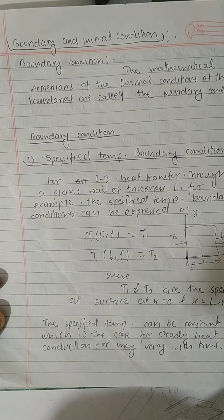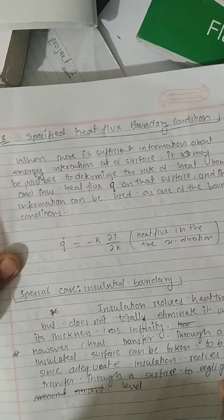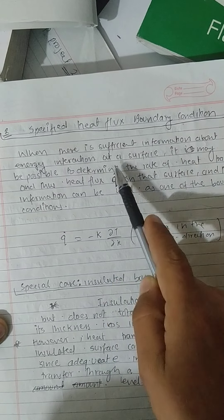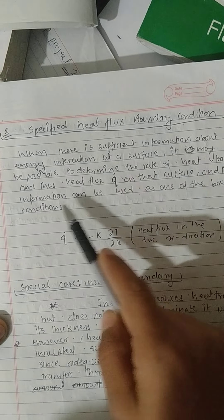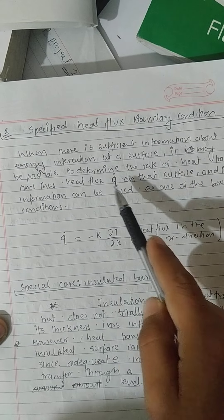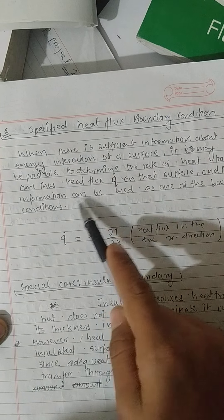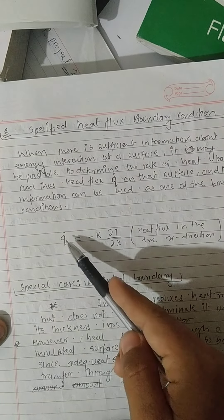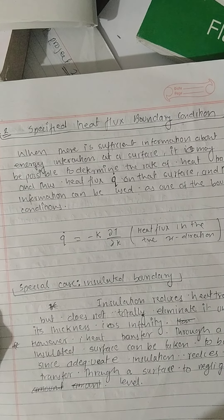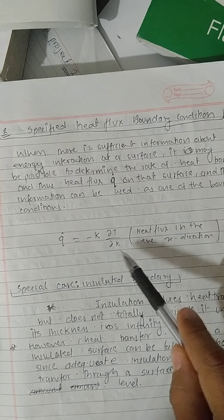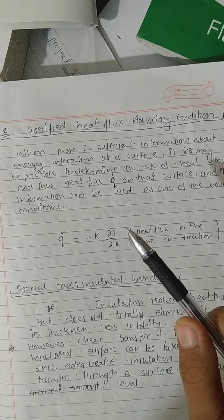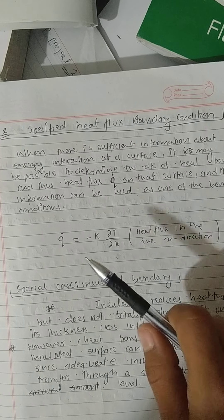The specified temperature can be constant, which is the case for steady heat conduction, or it may vary with time. For the specified heat flux boundary condition, when there is sufficient information about energy interaction at a surface, we can determine the heat flux q″. This is given as q″ = −k · ∂T/∂x, the heat flux in the x-direction, with units of W/m².